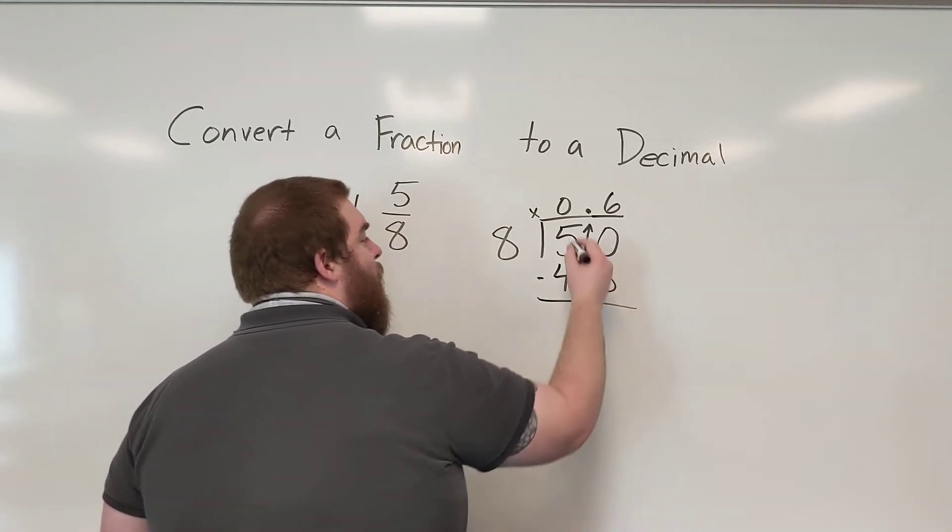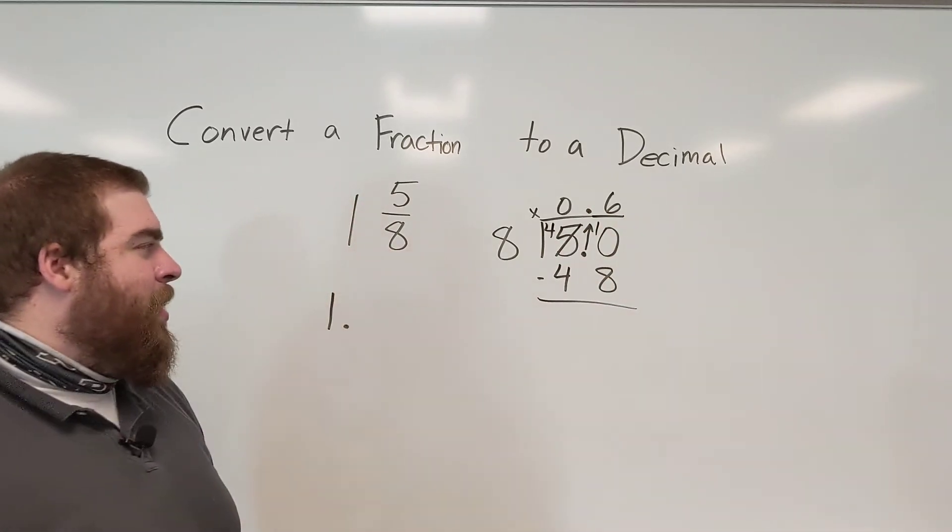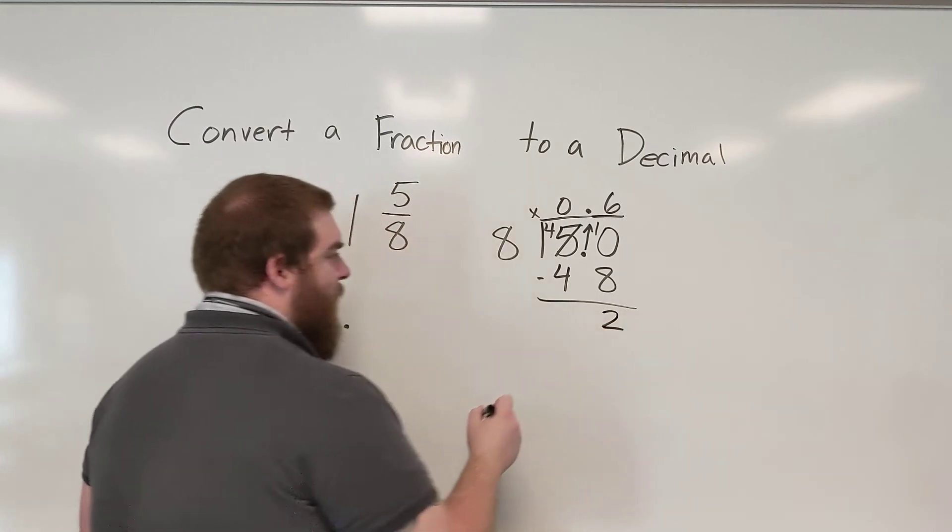50 minus 48, 0 minus 8, can't do that. So I borrow from the 5, make it a 4, and turn the 0 into a 10. 10 minus 8 is 2. 4 minus 4 is 0.